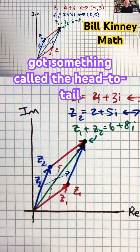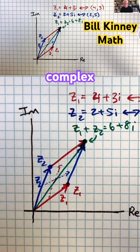You've got something called the head-to-tail interpretation of complex number and vector addition.